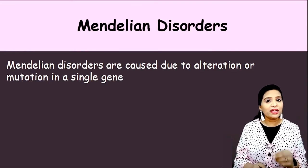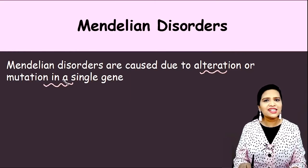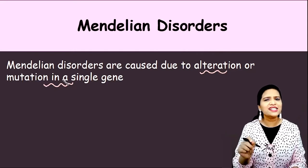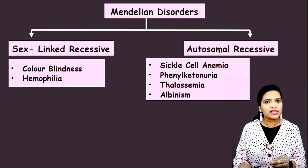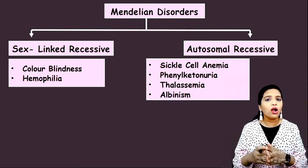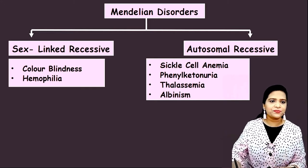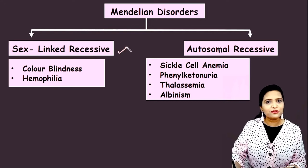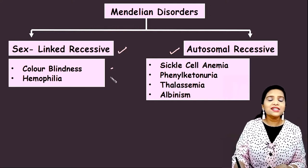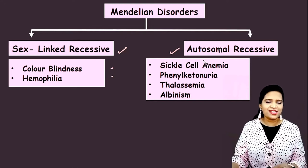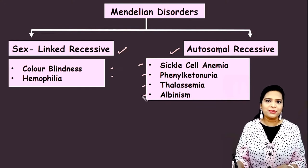A Mendelian disorder is caused due to alteration or mutation in a single gene. Depending upon where the mutated gene is present — whether on the sex chromosome or on the autosomes — we classify Mendelian disorders into two broad categories: sex-linked recessive disorders and autosomal recessive disorders. Examples for sex-linked recessive disorders are colorblindness and hemophilia. Examples for autosomal recessive disorders are sickle cell anemia, phenylketonuria, thalassemia, and albinism.